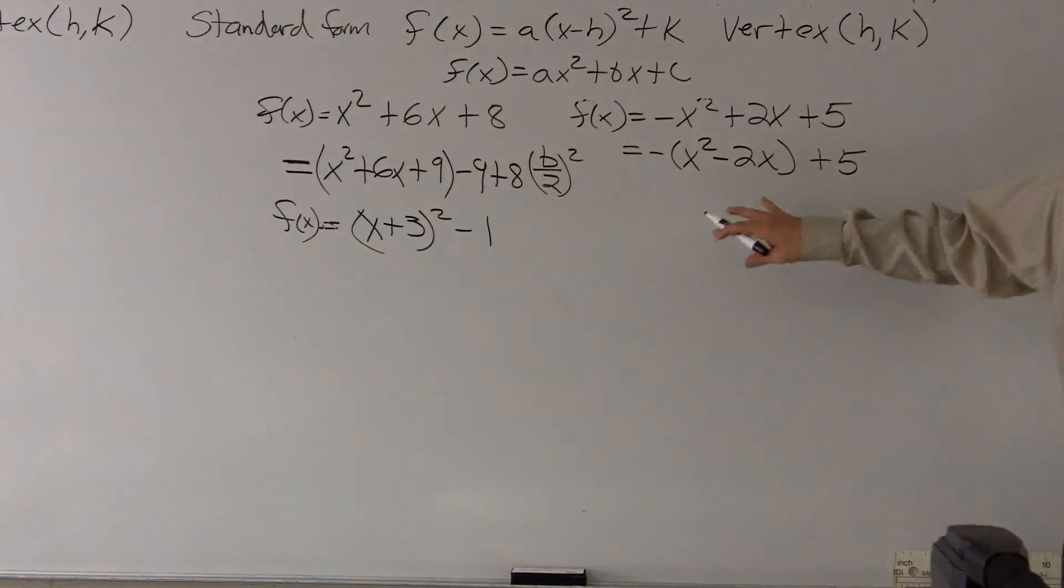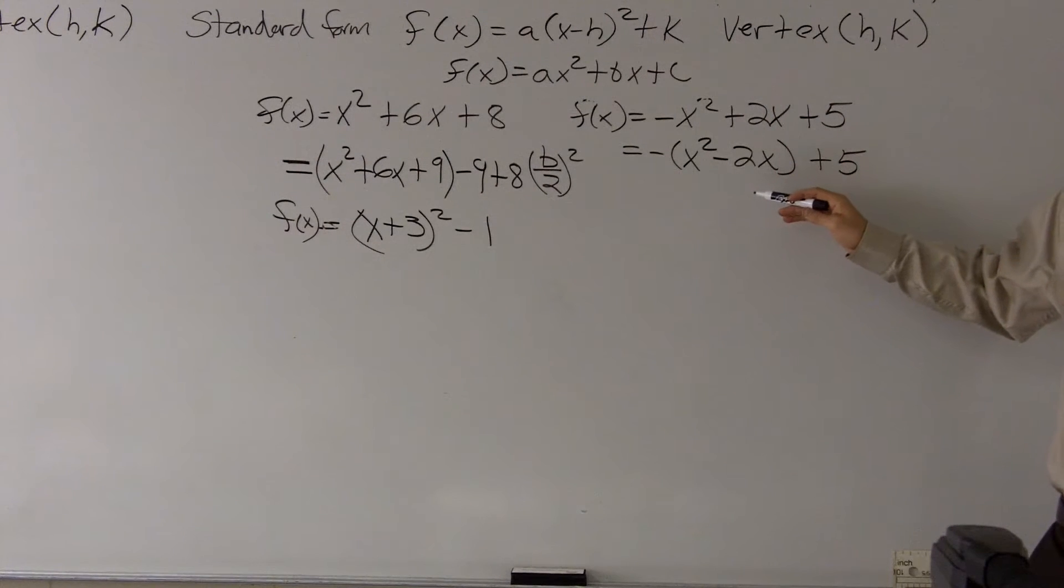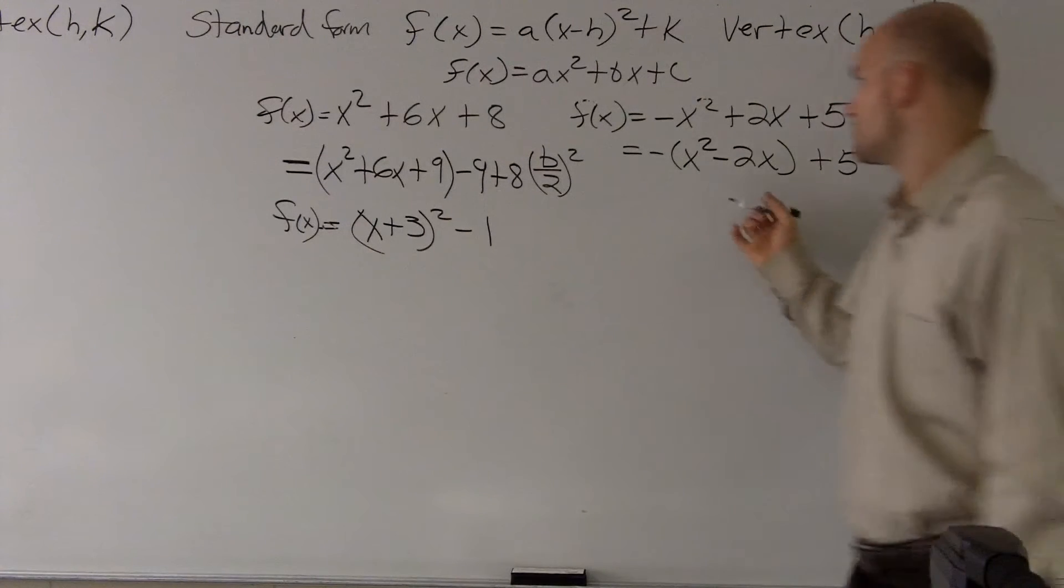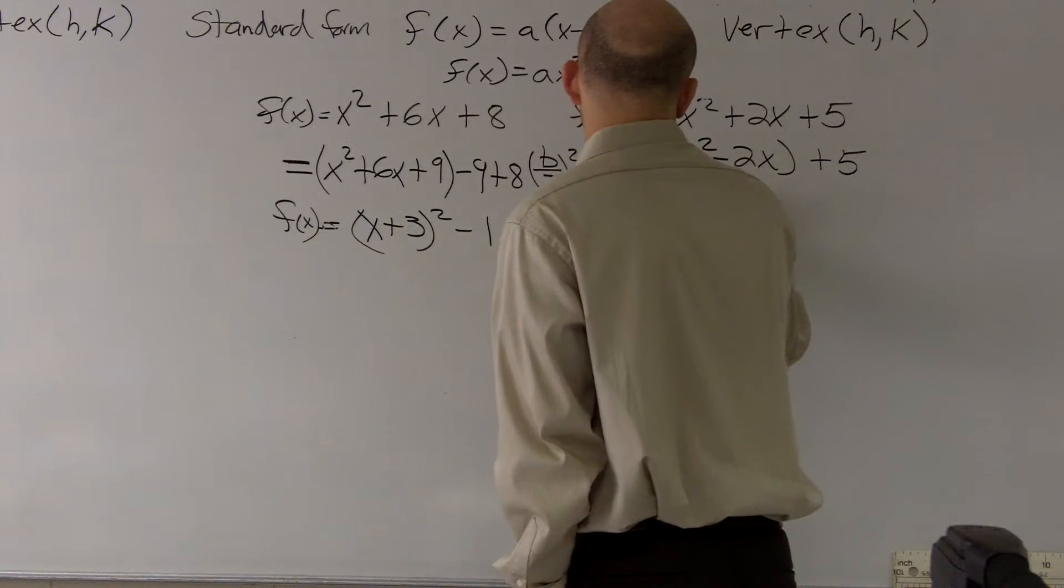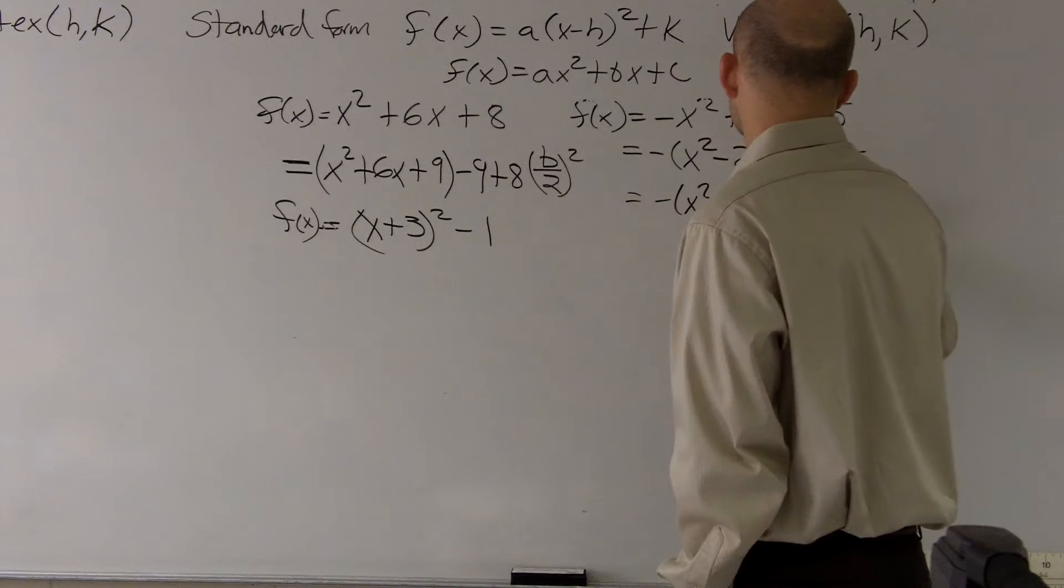This problem is a little bit more difficult because now what we have to do is I'm still going to do the same thing. I'm going to take my b over 2, which is negative 2 divided by 2 which gives me negative 1, right? And then negative 1 squared gives me 1. So I'm going to have x squared minus 2x plus 1.